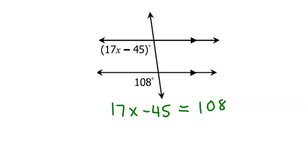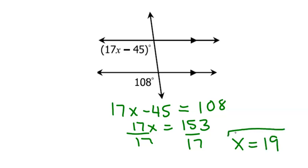And now we're going to add 45 to both sides. And when I do that, I get 153. Now all I have to do is divide both sides by 17, and I can find my value of x. x is equal to 9.